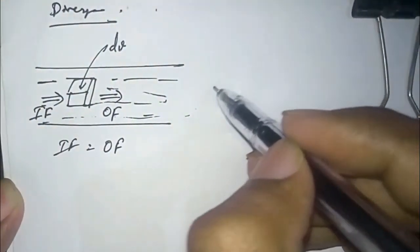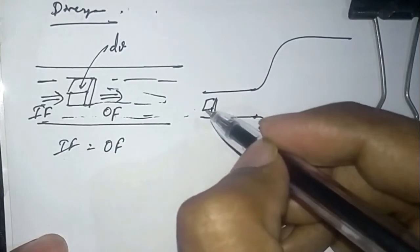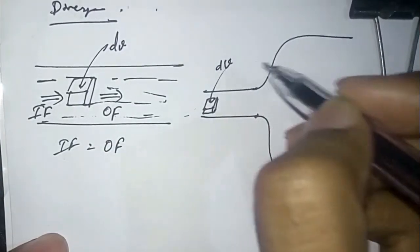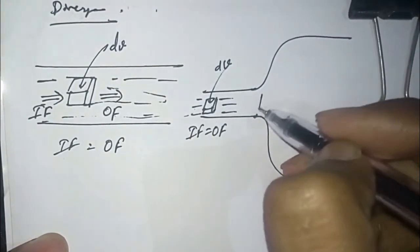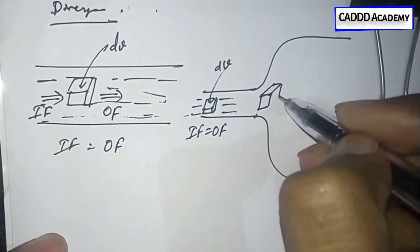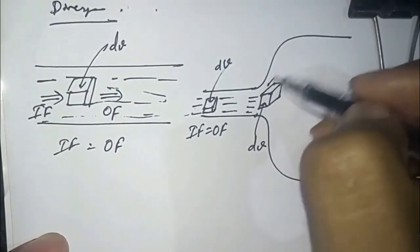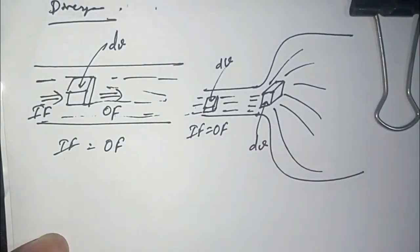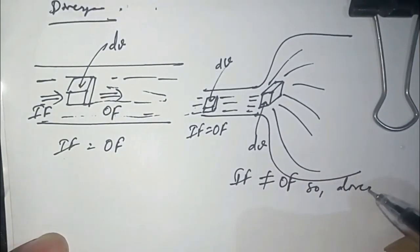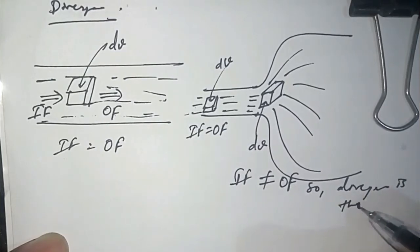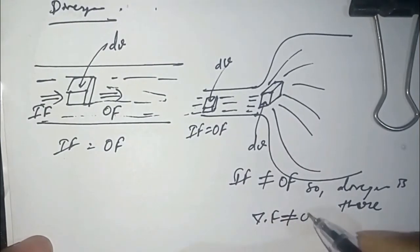If we take a pipe and a volume dv where flow is constant, inflow equals outflow. But if we take the same volume dv at a different point in the pipe, inflow is less and outflow is more than inflow, so inflow is not equal to outflow — divergence is present.